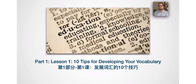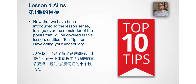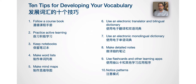So let's begin with Lesson 1: 10 Tips for Developing Your Vocabulary. Here are the 10 tips: 1) Follow a Course Book, 2) Practice Active Learning, 3) Keep Notebooks, 4) Make Word Lists, 5) Make Mind Maps, 6) Use an Electronic Translator and Bilingual Dictionary, 7) Use an Electronic Monolingual Dictionary, 8) Make Detailed Notes, 9) Use Flashcards and Other Learning Apps, 10) Notice Patterns.